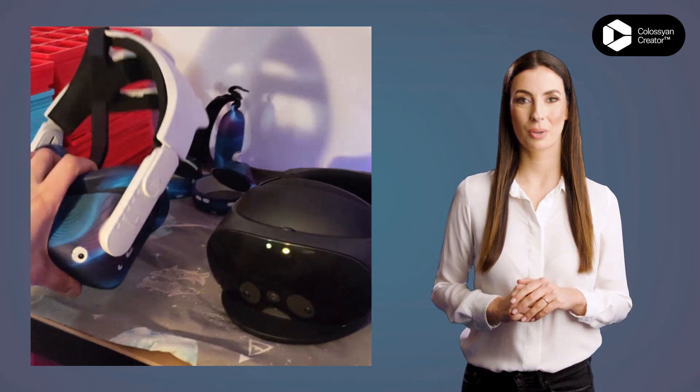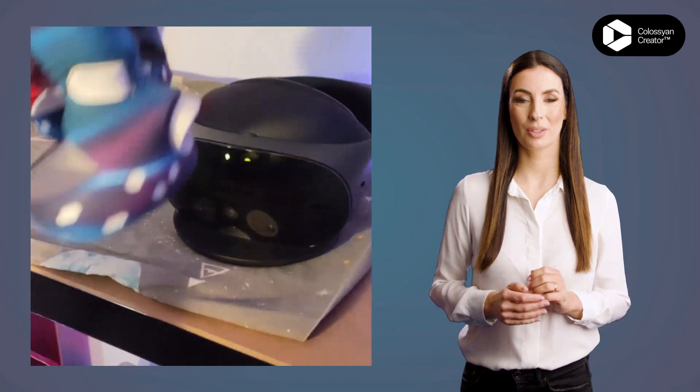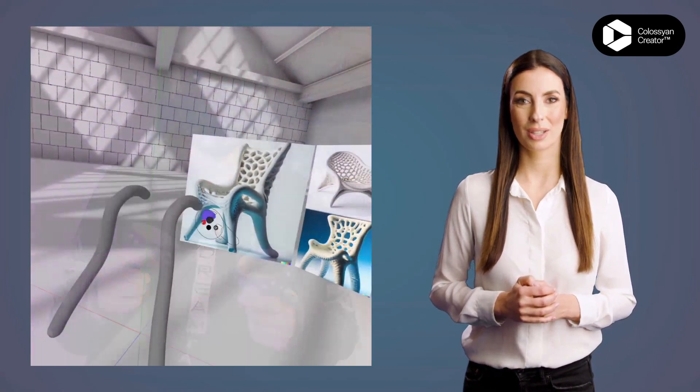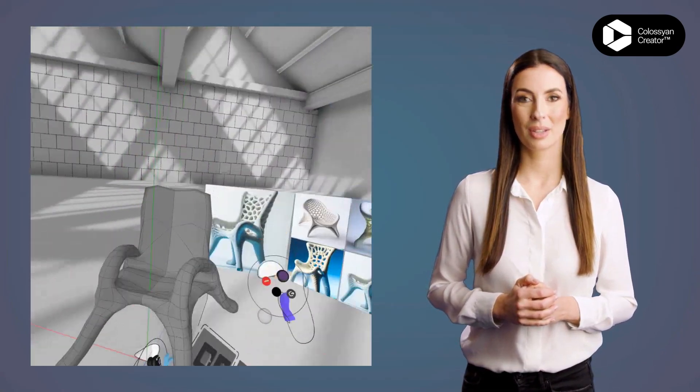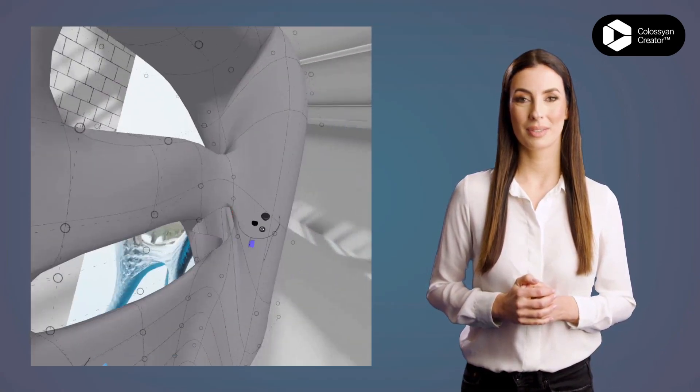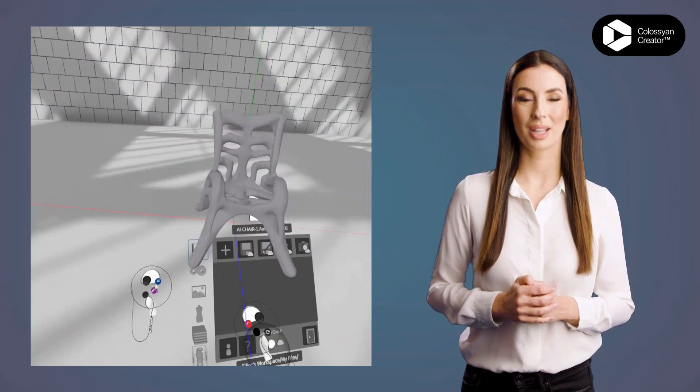I grabbed my MetaQuest VR headset and opened a 3D modeling application called Gravity Sketch VR, importing the images as references, then 3D modeling my own organic chair design, but more bony and skeletal than the porous coral theme that AI produced.